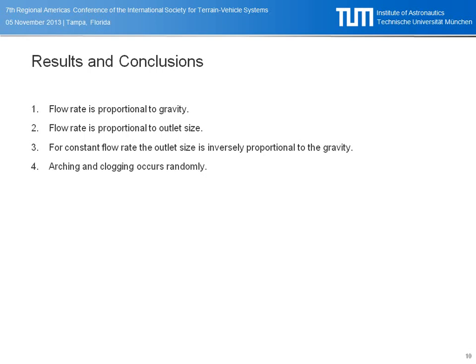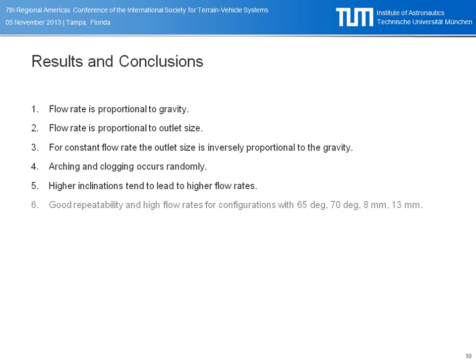We saw arching and clogging effects randomly. Higher inclinations of the funnels tend to lead to higher flow rates, though this was not always the case — especially for the highest inclination angles, which didn't follow that trend. We saw good repeatability and high flow rates for medium configurations with medium inclination angles and small outlet widths. Finally, we saw best repeatability and moderate flow rates — which is what you would aim for — for the asymmetrical configurations.